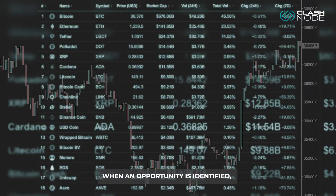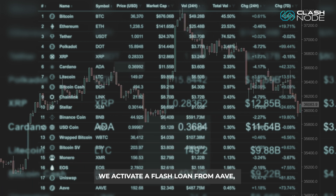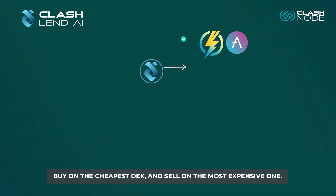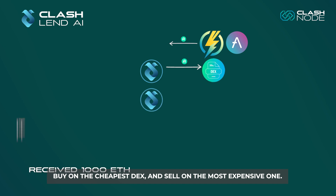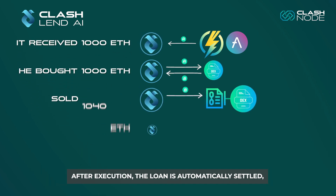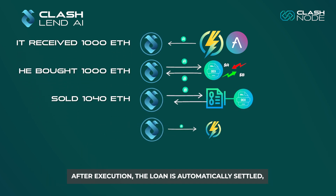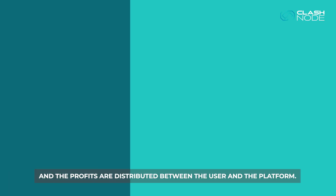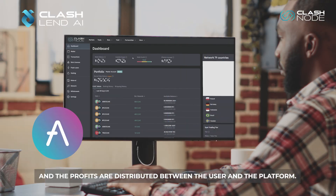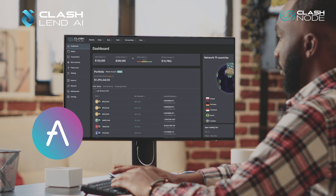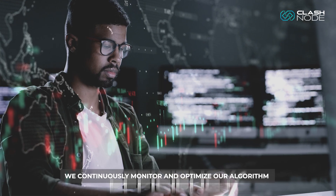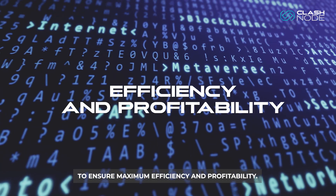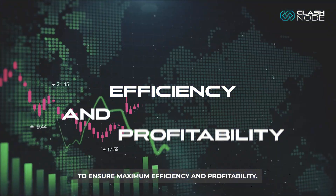When an opportunity is identified, we activate a flash loan from Aave, buy on the cheapest DEXs, and sell on the most expensive one. After execution, the loan is automatically settled and the profits are distributed between the user and the platform. We continuously monitor and optimize our algorithm to ensure maximum efficiency and profitability.